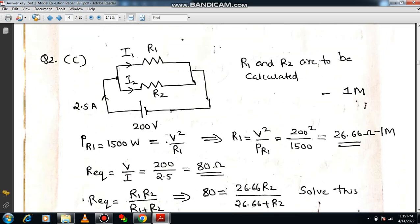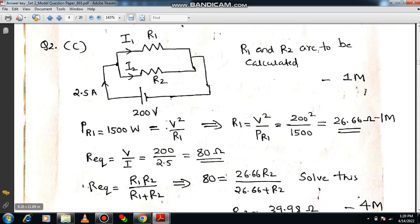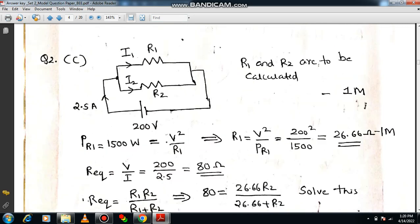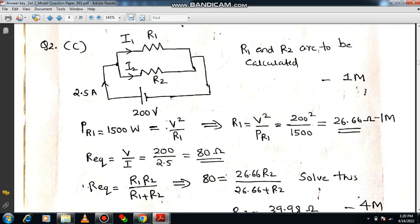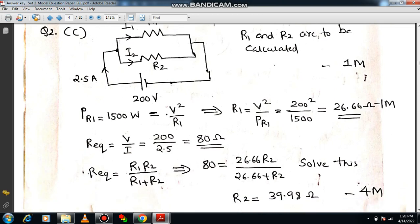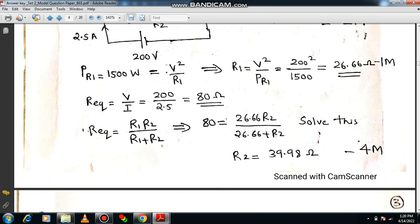Then PR1, that means power dissipated to one branch resistor is 1500 watts, that is equal to V²/R1. Use the formula. Therefore R1 can be computed as 26.66. If you solve this you will be getting another one mark. So you know that Req = V/I. Therefore you can use the equivalent. What is the voltage? Voltage is 200. Current is 2.5. Then you will be getting 80 ohms. You know that R1 and R2 both are connected in parallel. Therefore equivalent resistance will be R1R2/(R1+R2). From this you can compute the unknown value of resistor R2. So R2 will be 39.98 ohms. If you solve this obviously you will be getting 4 marks. This is the way how to answer this. Step by step you can solve. While solving you should be very much careful. Let me know if you are having any questions. I am happy to answer. Thank you for watching this video.